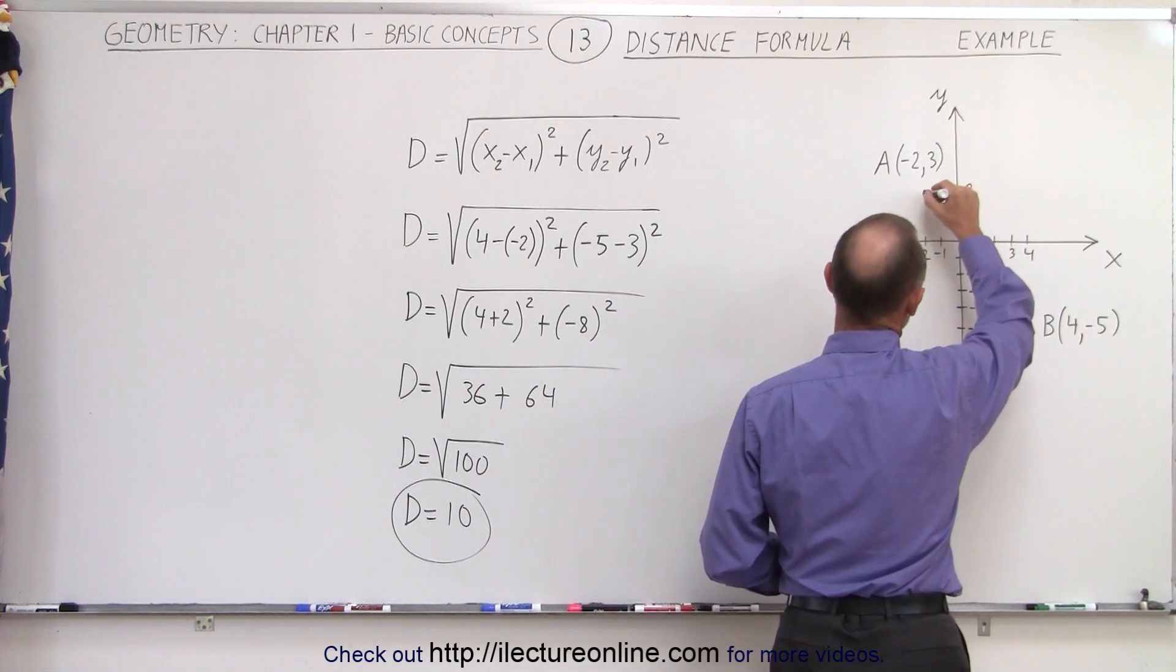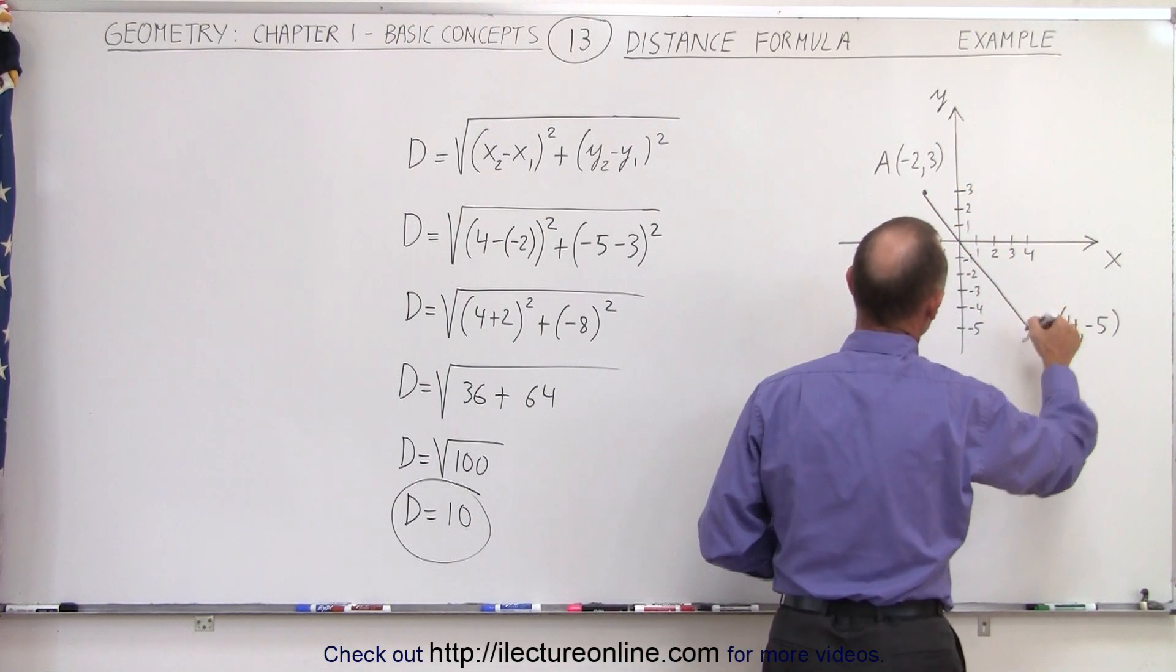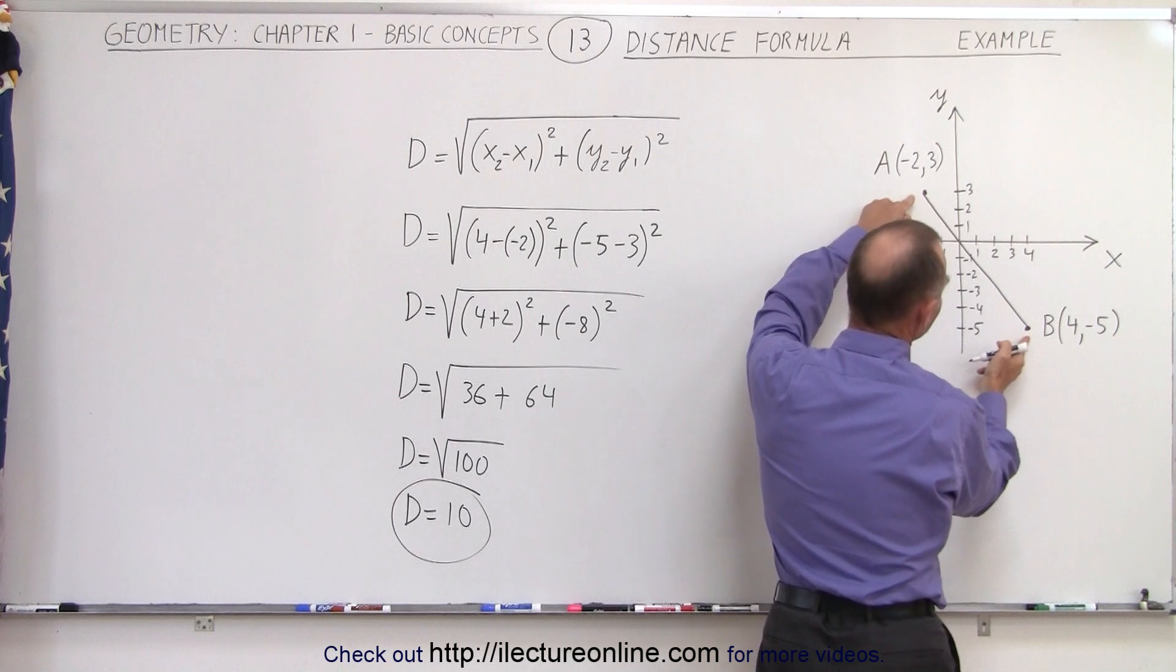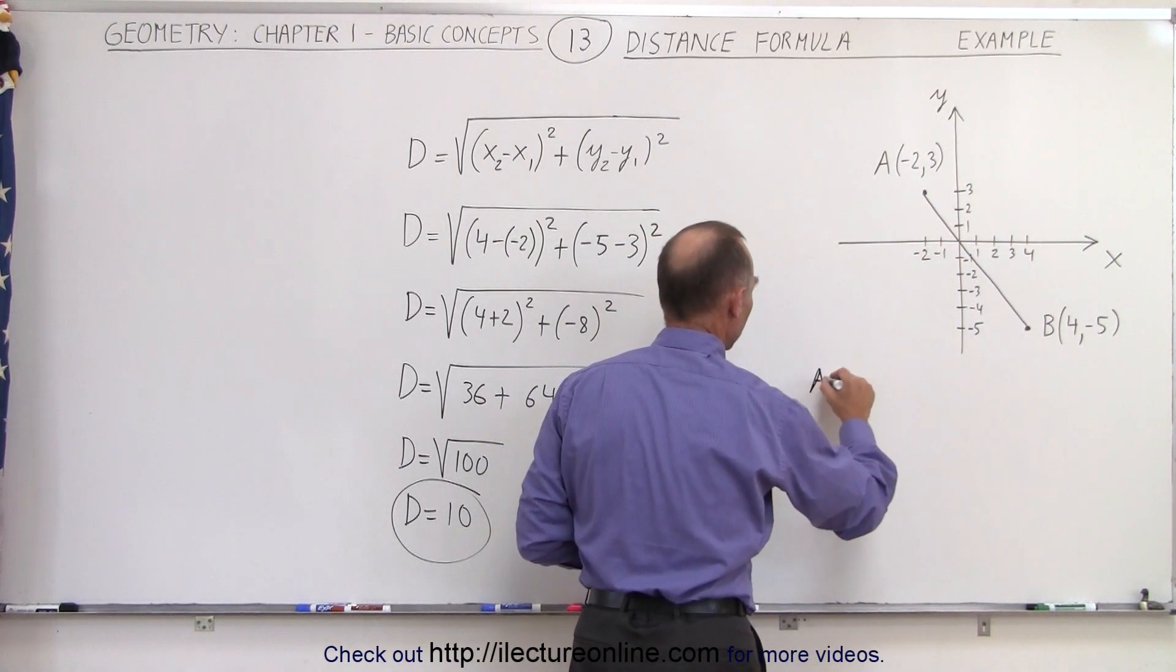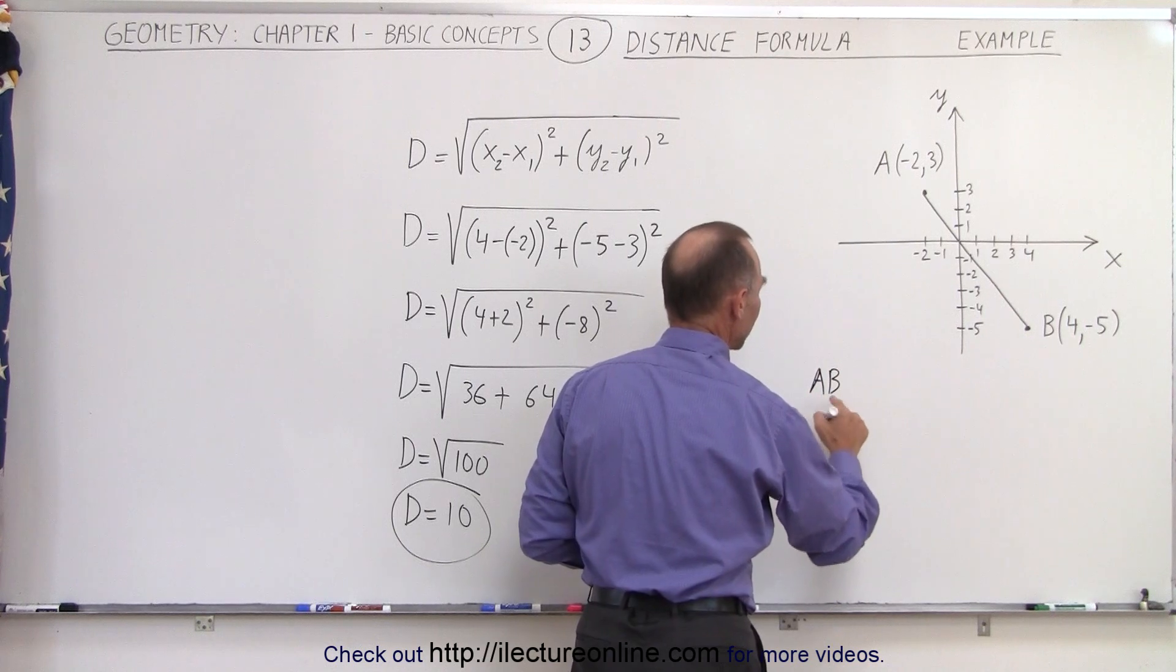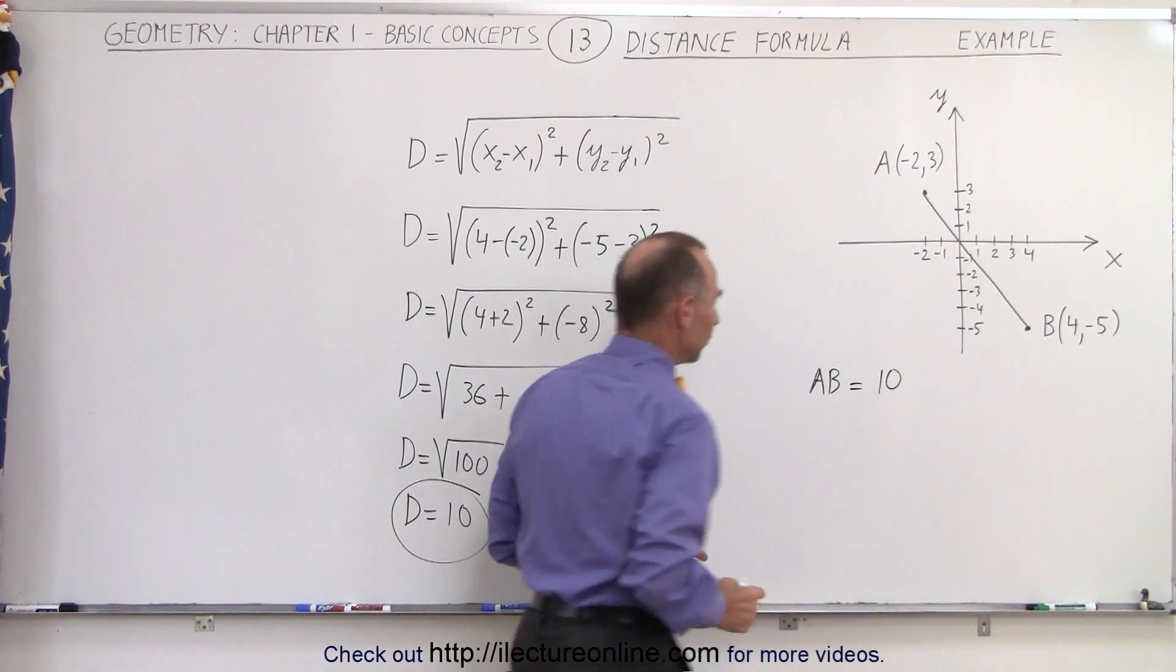If we draw a line, like this, from one point to the other, we now know that the line segment is equal to 10. So we can write that AB, which means the length of line segment AB is equal to 10.